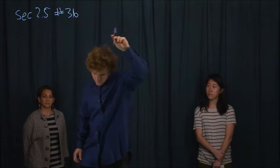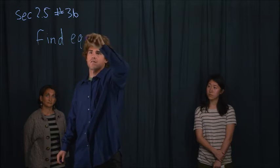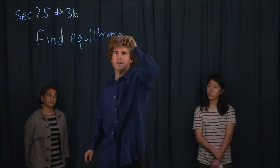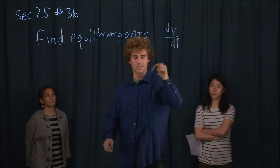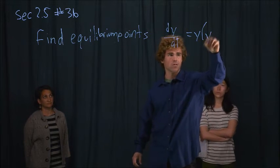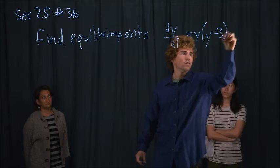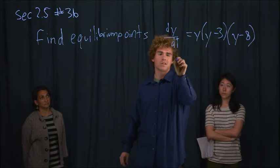My name is Sam and today we're going to be working on question 3b from section 2.5. It's asking us to find the equilibrium points of a differential equation. We're going to set this differential equation equal to 0, and that's going to help us find the equilibrium points. Here's our equation: y times (y minus 3) times (y minus 8), and to find the equilibrium points we're just going to set all of that equal to 0.